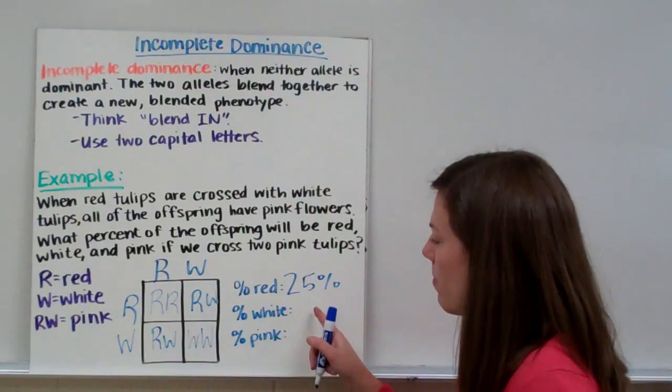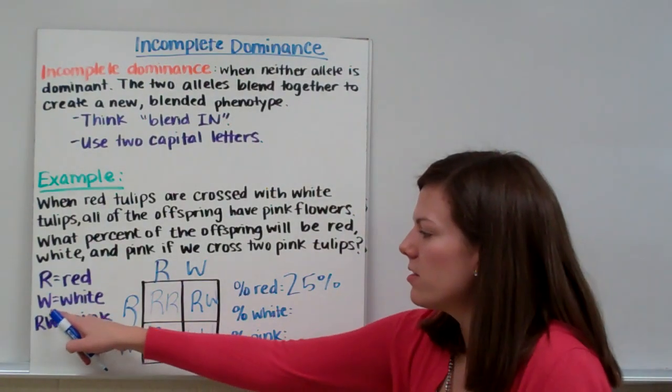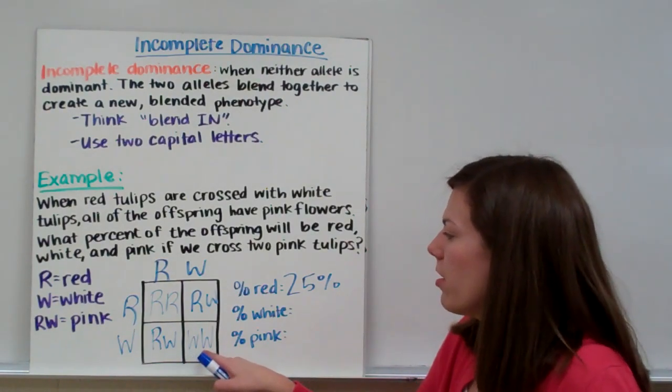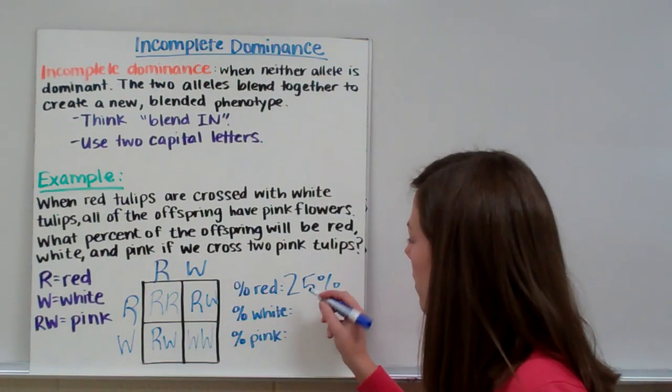And then it says white. White has a W allele and no other alleles, or else it would be pink. So W, W is right here, and one out of four is 25%.